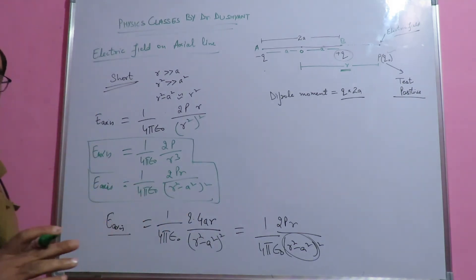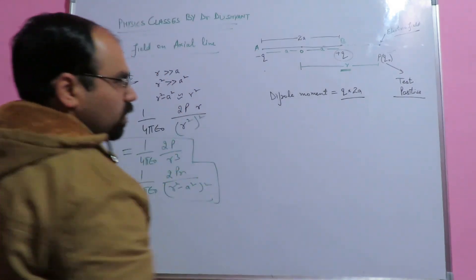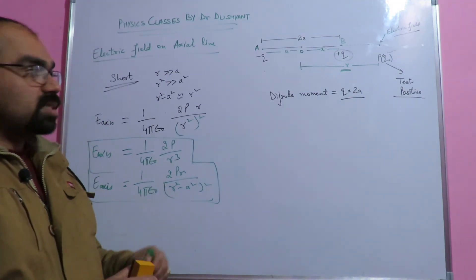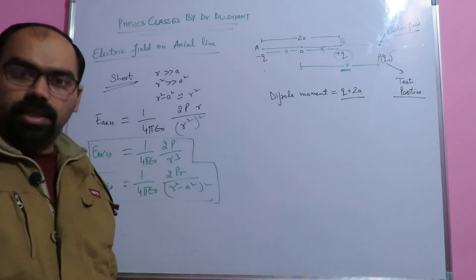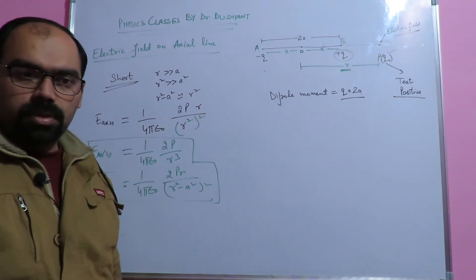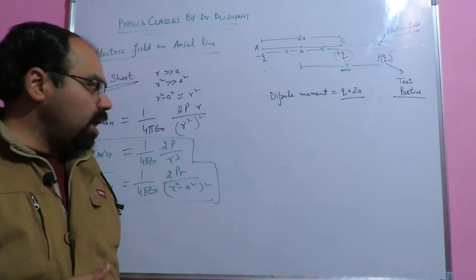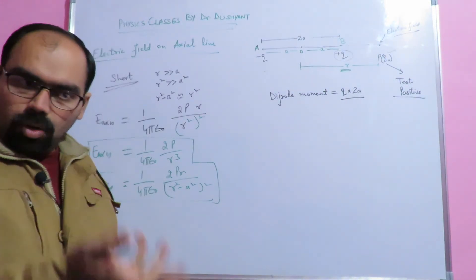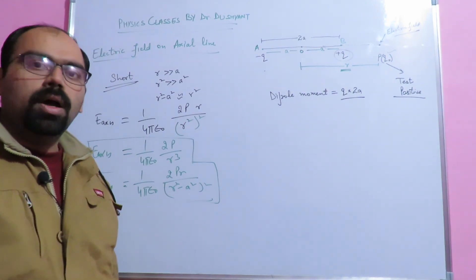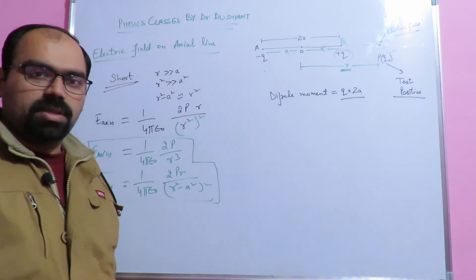If you still have any questions, please leave a comment on the video and we can discuss in our next lecture. This was our fourth lecture. In the next lecture, we are going to discuss the electric field at a point on the equatorial line of the same dipole. Please like, subscribe, and share so we can have a good audience. Thank you, have a great time. Enjoy the lectures by Dr. Dushin on physics classes. Goodbye.